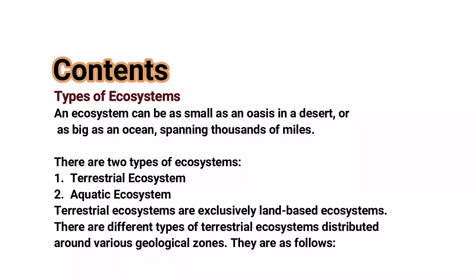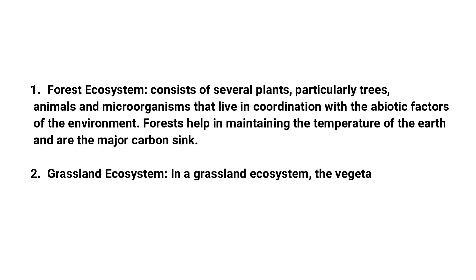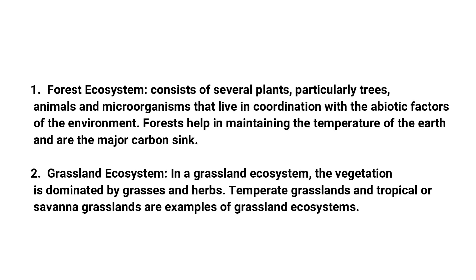The first terrestrial type is the forest ecosystem, which consists of several plants — particularly trees — animals, and micro-organisms that live in coordination with the abiotic factors of that environment. Forests help in maintaining the temperature of the earth and are the major carbon sink.